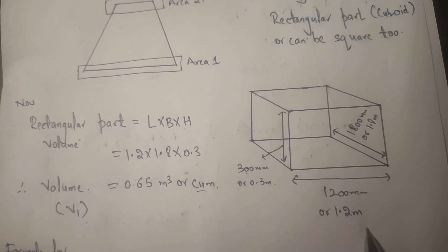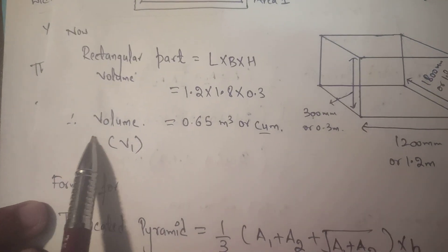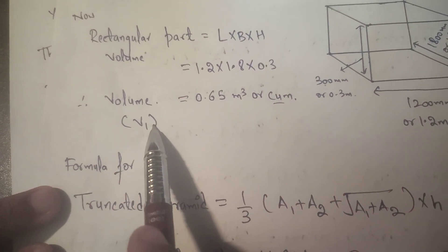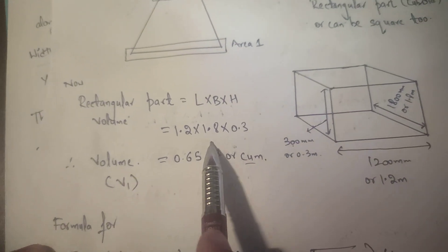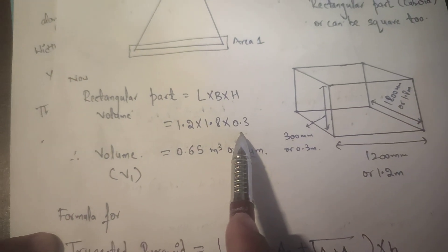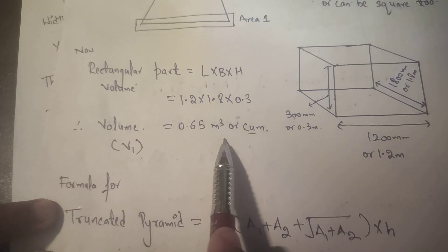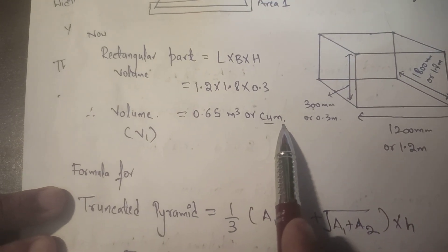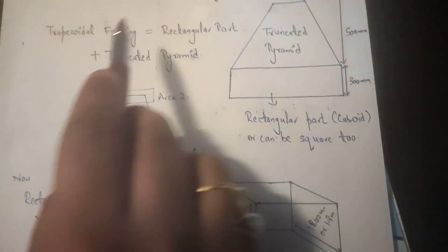Therefore the rectangular part volume equals 1.2 × 1.8 × 0.3 = 0.65 cubic meters.